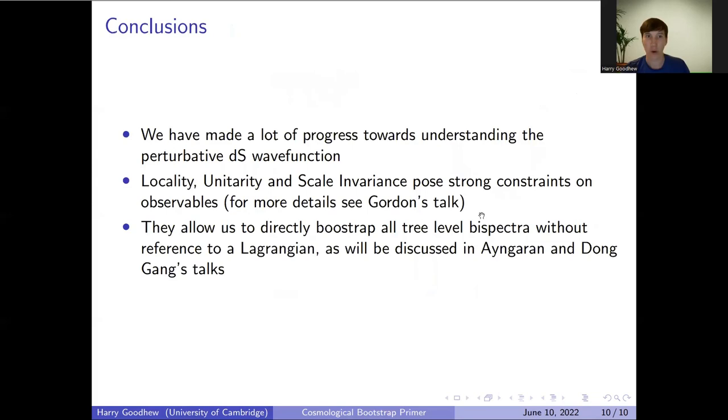In conclusion, we've made a lot of progress towards understanding the de Sitter wave function, at least in perturbation theory. In particular, we've understood the constraints that locality, unitarity, and scale invariance pose on our observables. Gordon goes into a little bit more detail about how these things come about, and these results allow us to directly bootstrap all tree level bispectra without reference to a Lagrangian, as will be discussed in both Angren and Donggang's talks. Thank you very much for listening, and I look forward to hearing your questions in the discussion period.